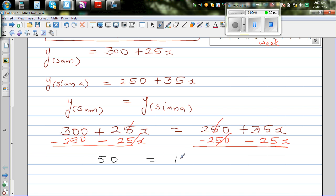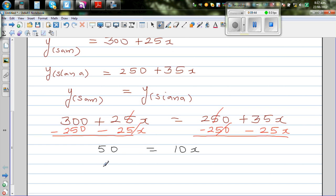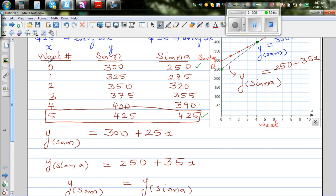Now I'm going to divide both sides by 10. So 50 divided by 10 is equal to 10x divide by 10. Dividing both sides by 10, this implies x is equal to 5. And that's what we got. When x is 5, the savings are equal.